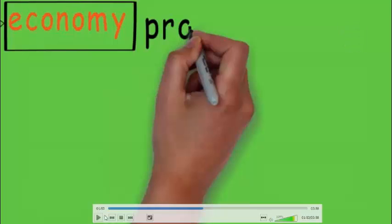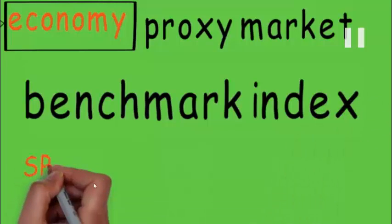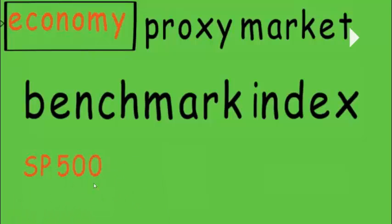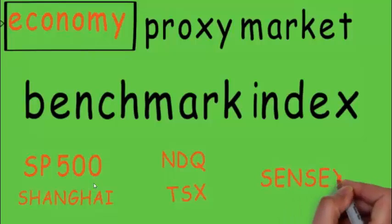Since the actual market economy index is not directly available, we use a proxy — a well-established benchmark index. This benchmark index varies by country: for America it is the S&P, there is also NASDAQ, Tokyo, Shanghai, or the Sensex and Nifty for India. So 'market economy' in CAPM refers to this benchmark index.